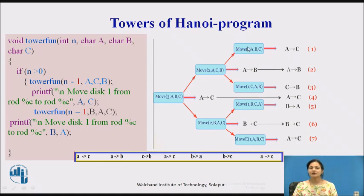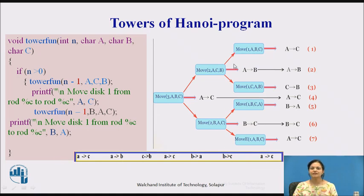Finally, after all the recursive calls, we get the complete move sequence: first move A to C, then A to B, then C to B, then A to C, then B to A, then B to C, and finally A to C. This is the sequence we get from all the recursive calls.